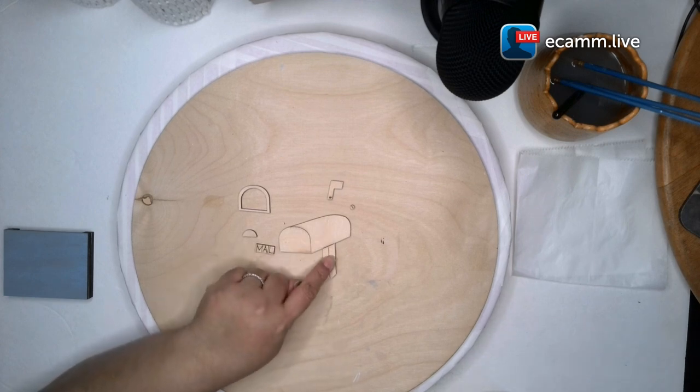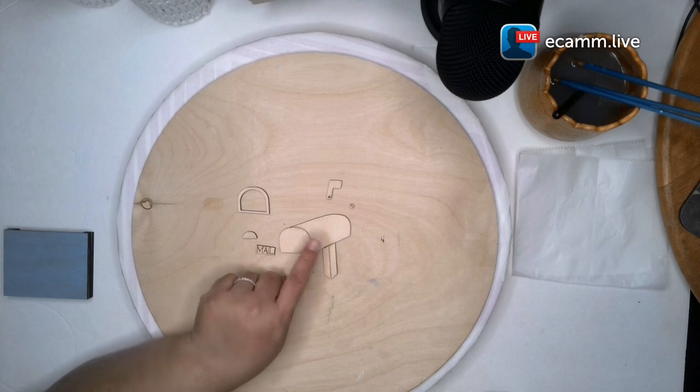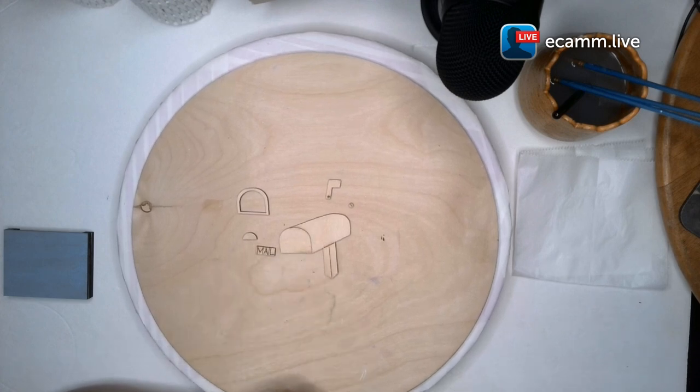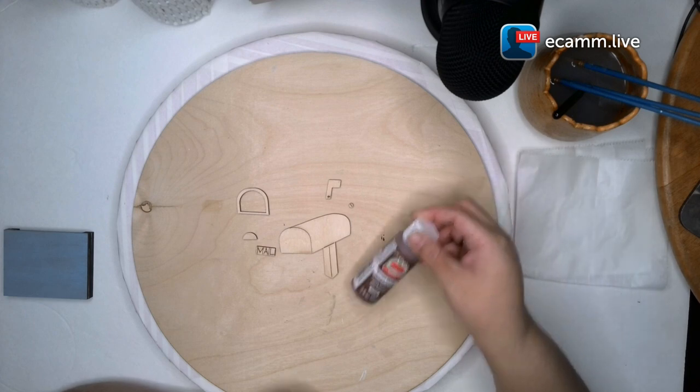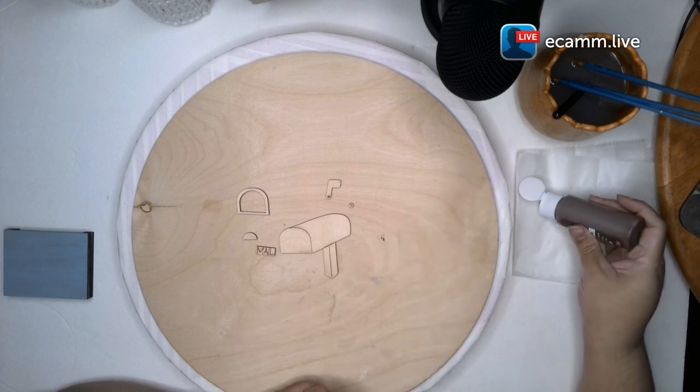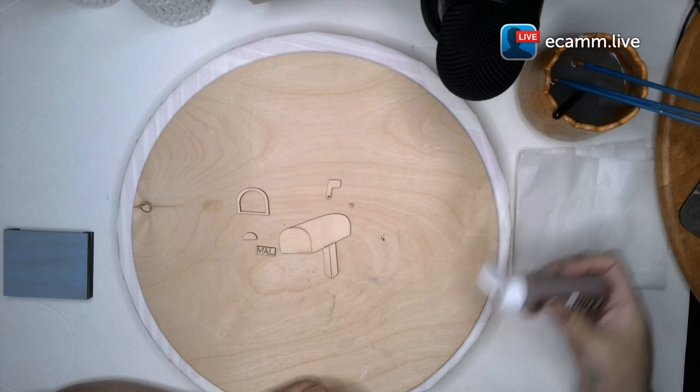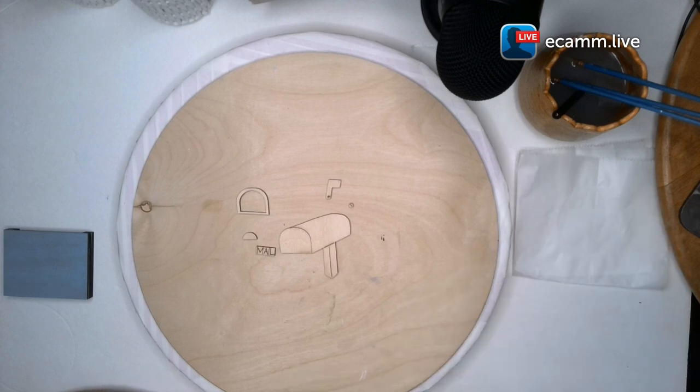I'm thinking of doing brown for the post and then silver for the mailbox. Let's go ahead and start with the brown. We are using brown oxide from Apple Barrel.